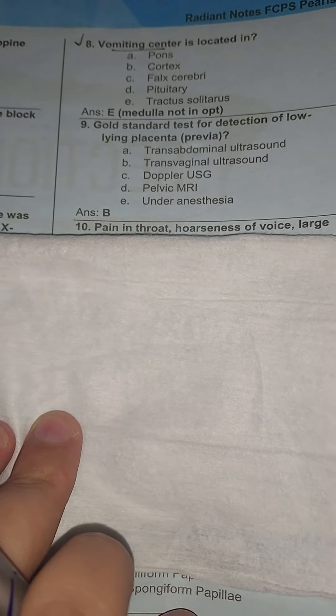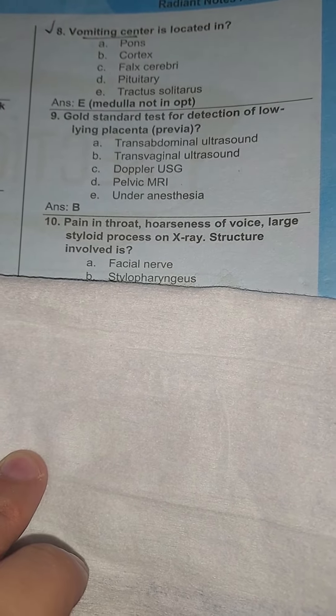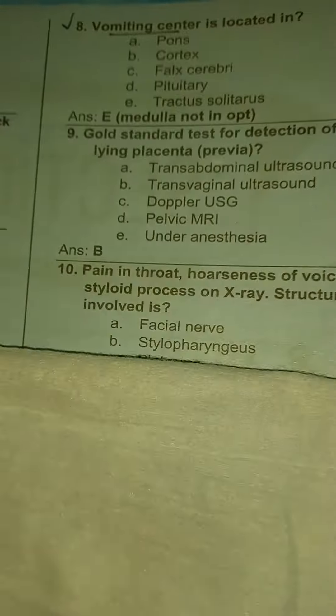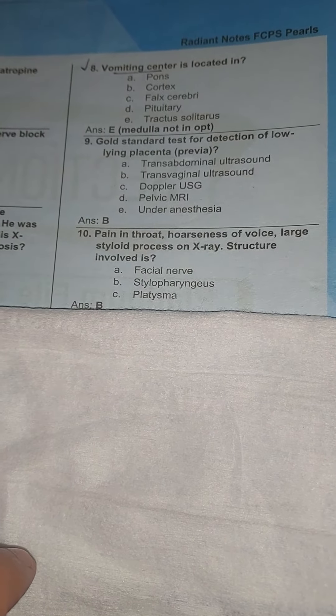The next question: pain in throat and hoarseness of voice with a large styloid process on X-ray — which structure is involved? Options include: A: facial nerve, B: stylopharyngeus. The answer is stylopharyngeus.